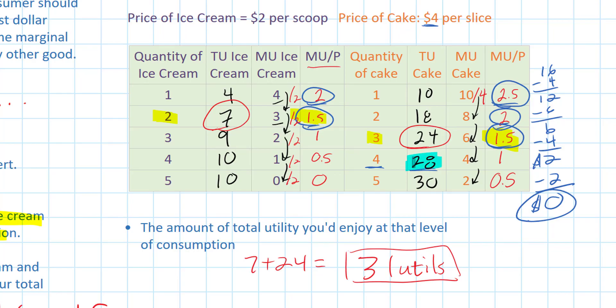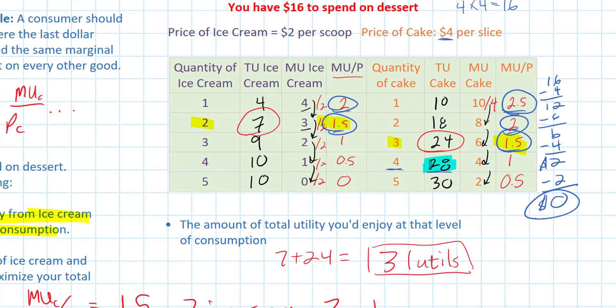So 31 utils is better than I could have done by consuming nothing but cake, even though at first glance cake makes me happier. What I've shown in this lesson is that consumers' decisions do not weigh only the amount of happiness that particular goods provide them.